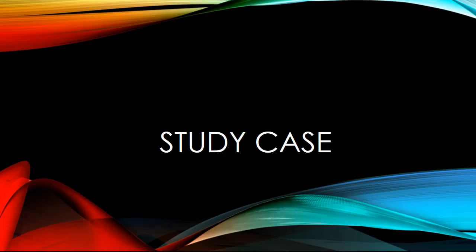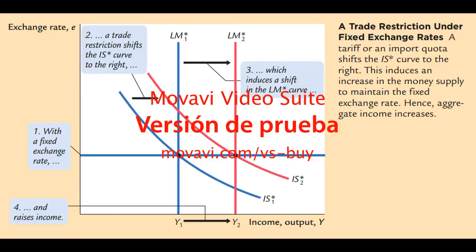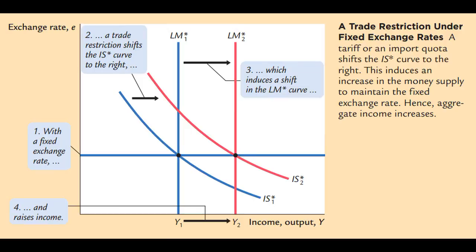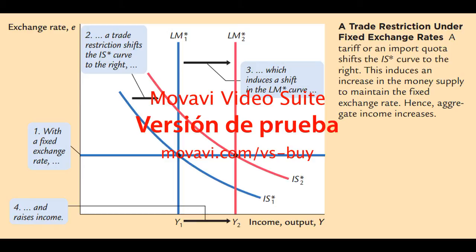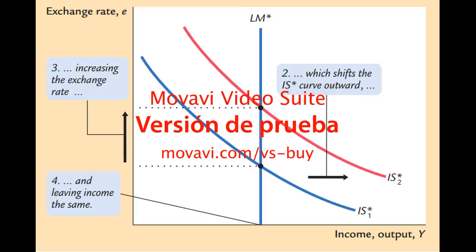Now, assume that the national government reduces imports by imposing any kind of tariffs or quotas. With a fixed exchange rate, this policy produces a reduction in imports, so net exports will be positive, which increases the exchange rate. Due to the national commercial policy, the central bank intervenes in the market through a monetary expansion, which reduces the exchange rate back to its initial level, which increases GDP, as you can see in the image.